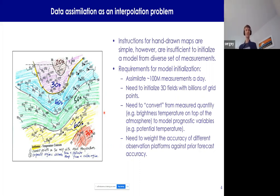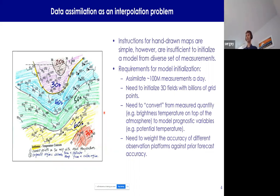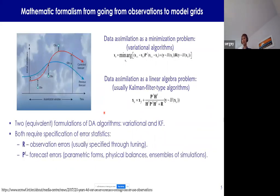But for model initialization it's much more complex. You have to assimilate about 100 million measurements a day — you can't do it by hand. You need to initialize 3D fields with billions of grid points. You also need to convert from measured quantities, such as brightness temperature at the top of the atmosphere — what the satellite sees — to model prognostic variables such as potential temperature through the entire depth of the atmosphere. And finally, you need to rate the accuracy of different measurement systems against a forecast. To do all of that, you solve either an optimization problem or a linear algebra problem.